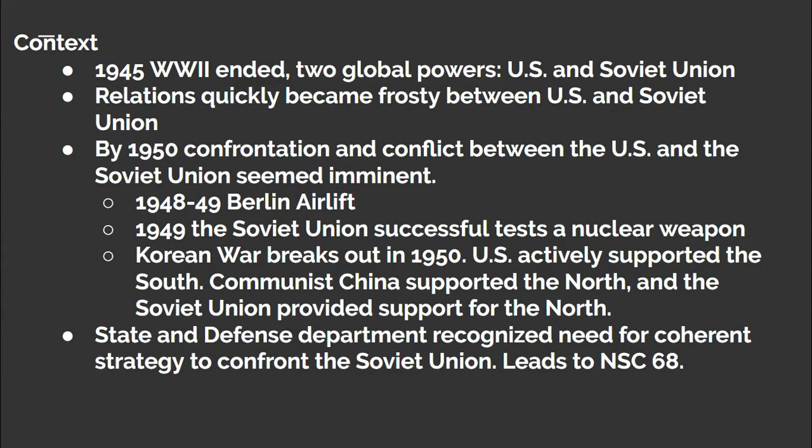By 1950, confrontation and conflict between the two powers seemed imminent. A series of international incidents led the two emerging superpowers to the brink of war. One of them was a dispute over the capital city of Berlin, which lied within the occupied zone of the Soviet Union, but the city itself was divided up between the U.S. and its allies and the Soviet Union. The Soviets blockaded the city for a time, and the U.S. ran supply airlifts to keep their part of the city from falling into Soviet hands.